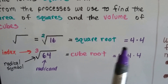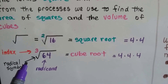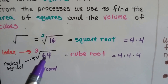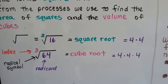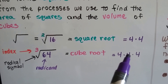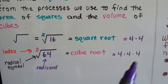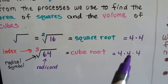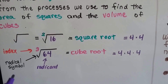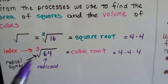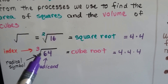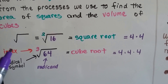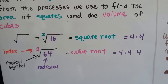It just means 4 times 4. When we see a little 3 here, that's the cube root. That would be 4 times 4 times 4 — so we have 3 of the 4s. That's our radicand. That's our radical symbol. And that's our index, the 3.